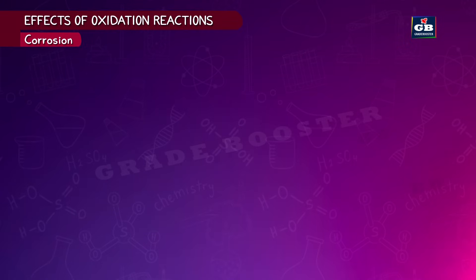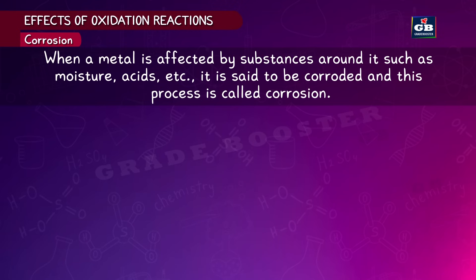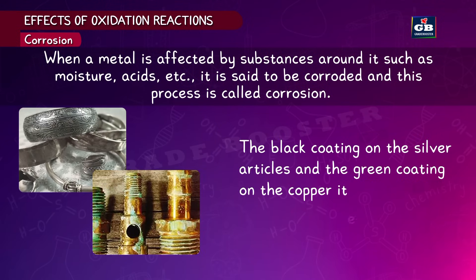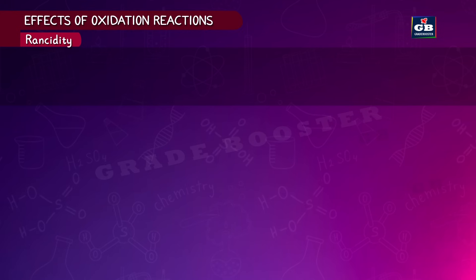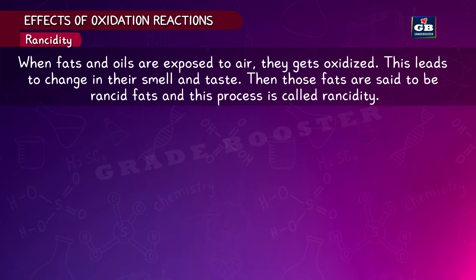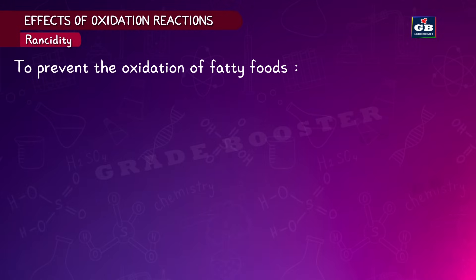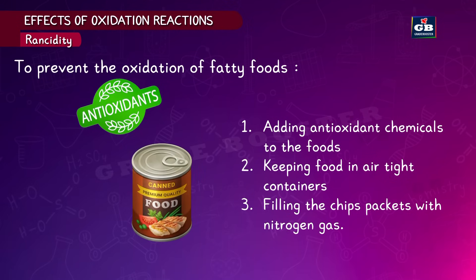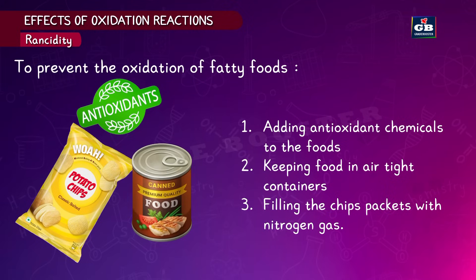Corrosion occurs when a metal is affected by surrounding substances like moisture or acids. When iron is exposed to moisture it gets coated with reddish-brown rust. Black coating on silver and green coating on brass are also examples of corrosion. Rancidity occurs when fats and oils are oxidized by air, changing their smell and taste. To prevent oxidation of fatty foods: add antioxidant chemicals, keep food in airtight containers, or fill chip packets with nitrogen gas.